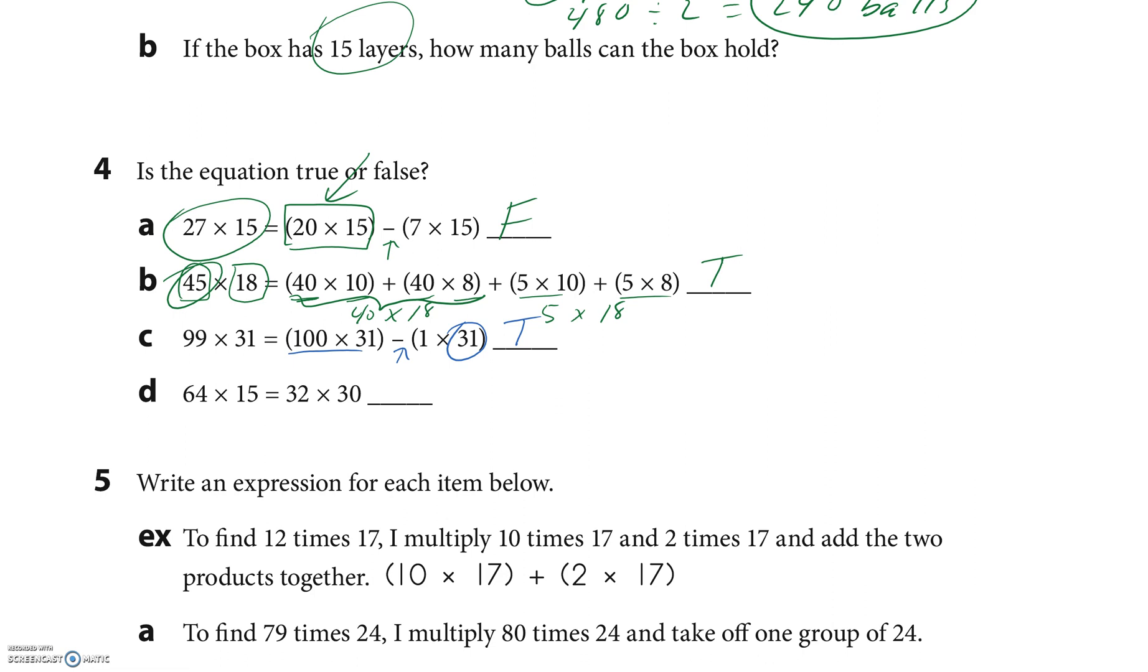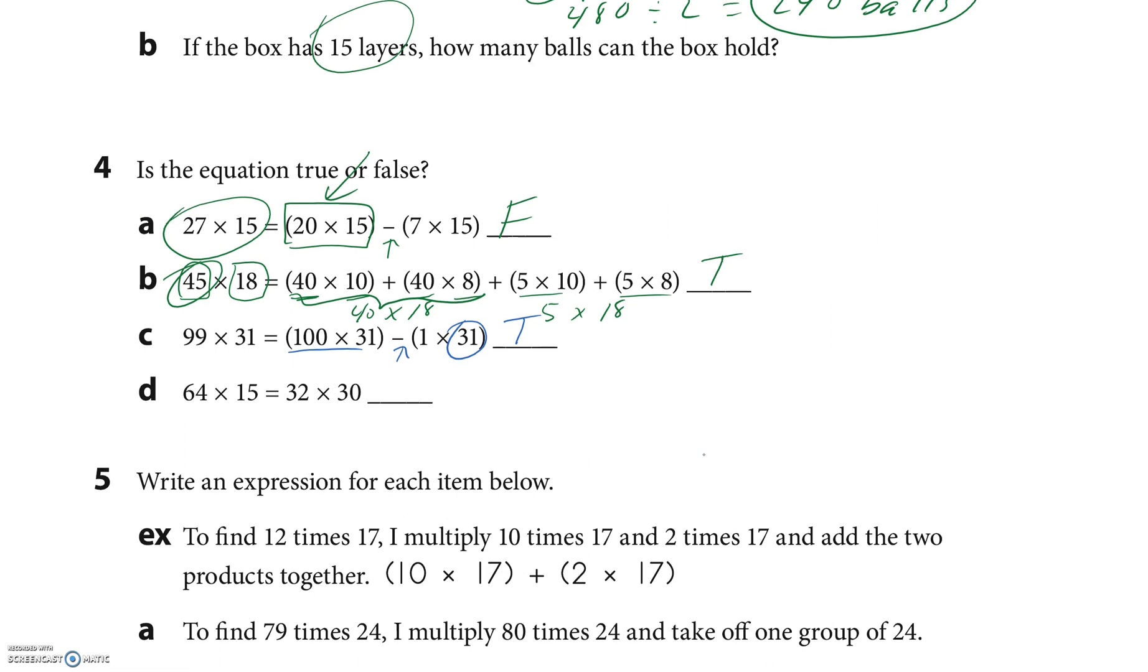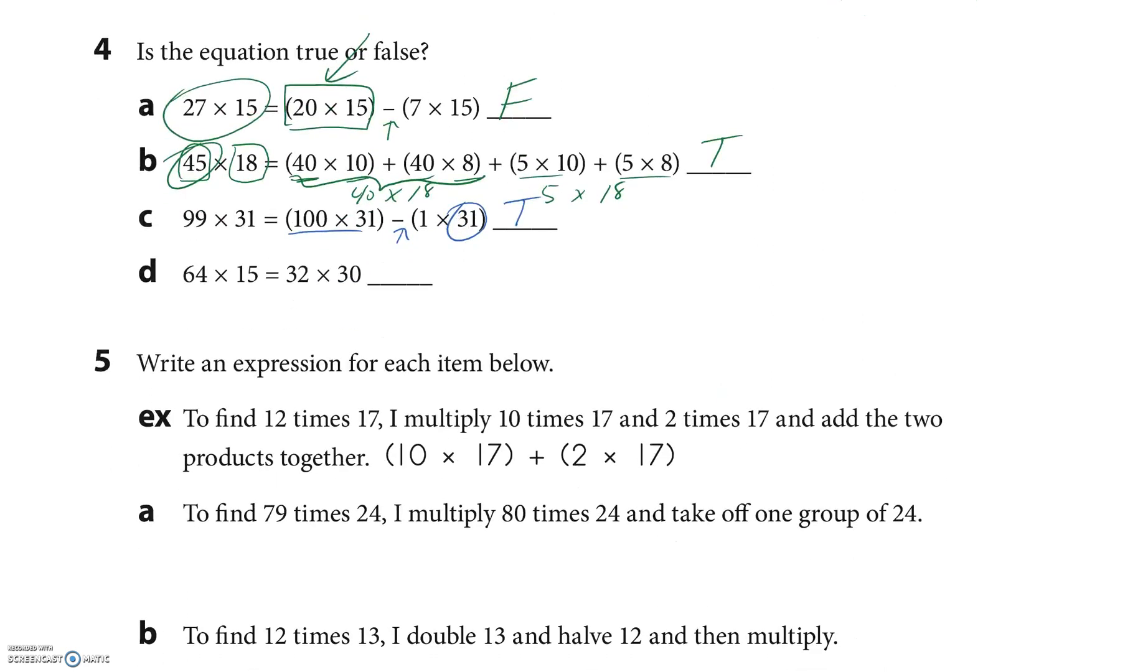64 times 15. Think about doubling and halving. I think, well, 32 times 2 is 64, and then 30 divided by 2 is 15, and that's exactly the same as that. I think that one's true.